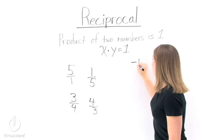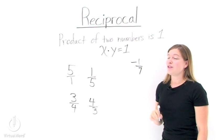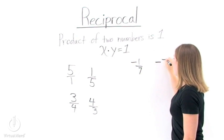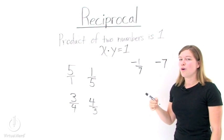What about negative 1 sevenths? All we need to do is flip over the fraction. We get negative 7 over 1, or just negative 7.